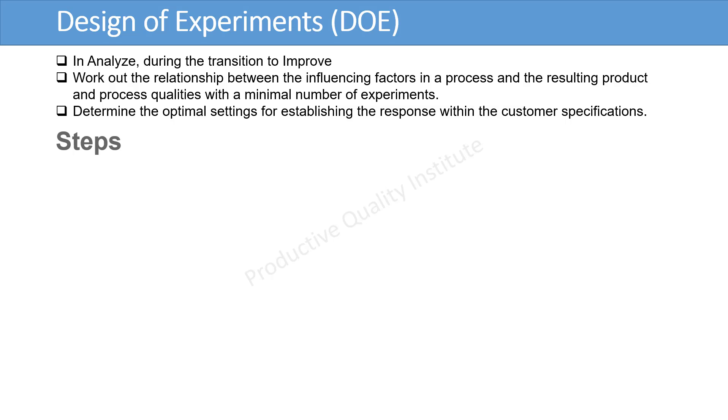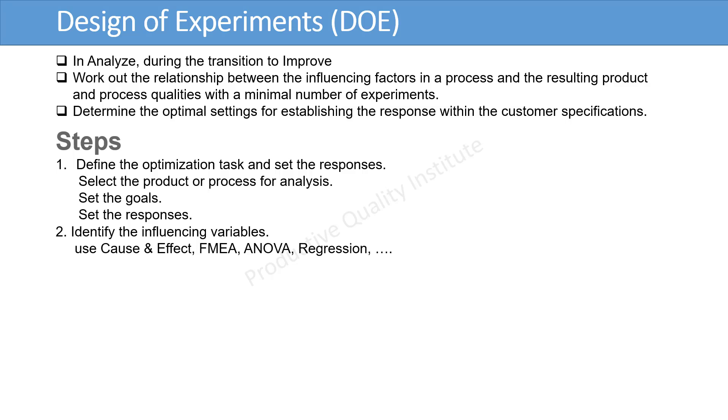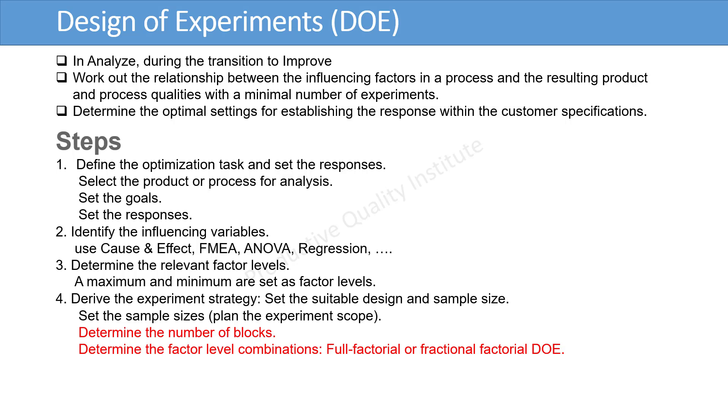The steps of DOE are: 1. Define the optimization task, and set the responses. Select the product or process for analysis. Set the goals and responses. 2. Identify the influencing variables using Cause and Effect. 3. Determine the relevant factor levels. Maximum and minimum are set as factor levels. 4. Derive the experiment strategy, set suitable design and sample size. Set the sample sizes and plan the experiment scope.